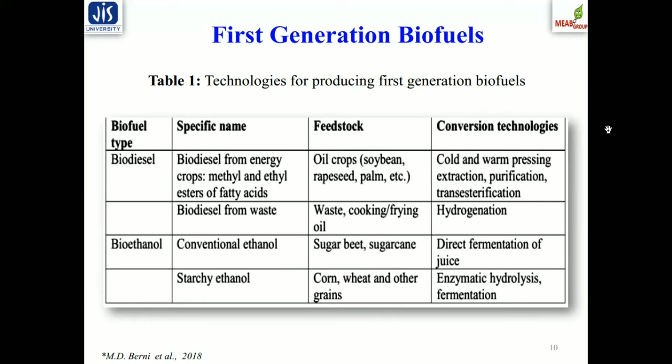Bioethanol is another biofuel type, mostly derived from sugar beet, sugarcane, corn, wheat, and other grains through direct fermentation or by enzymatic hydrolysis and fermentation. The issue is that these feedstocks compete directly with the food chain, and their combustion generates chlorofluorocarbons that induce global warming. This is the basic lacuna that lies in the generation of first generation biofuels.